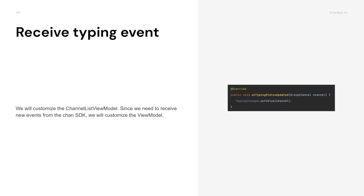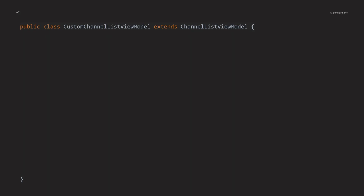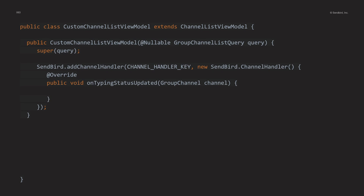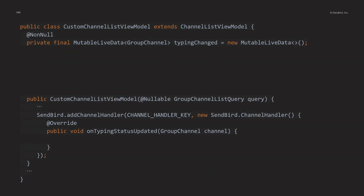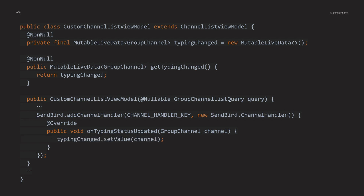Next, let's receive the typing status event from the ViewModel. You must use the Chat SDK to receive typing status events. Create a custom ViewModel by inheriting the channel list ViewModel. In the constructor, add the channel handler provided by the Chat SDK. Overwrite the onTypingStatusUpdated method in the channel handler to receive the event. Also override the onCleared method in the ViewModel, and release the channel handler registered in the constructor. Declare LiveData so that you can observe event changes in the fragment, declare a getter for this LiveData, and update the value of LiveData in the onTypingStatusUpdated method.